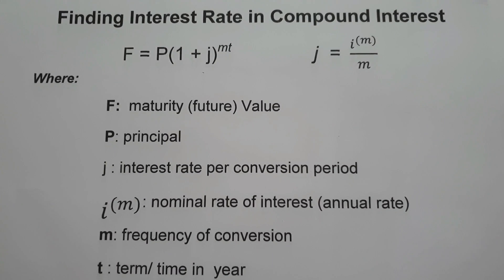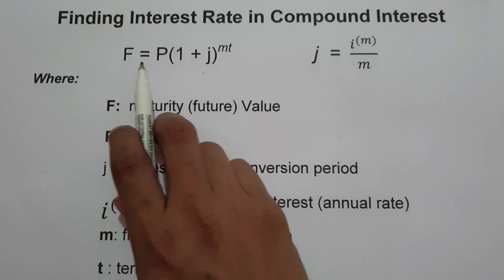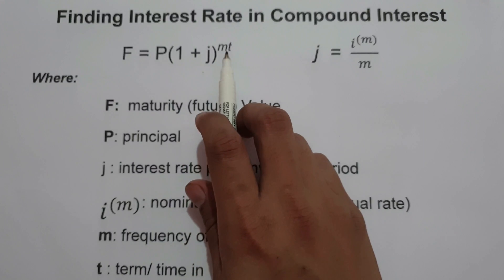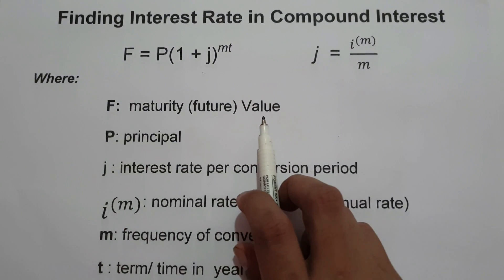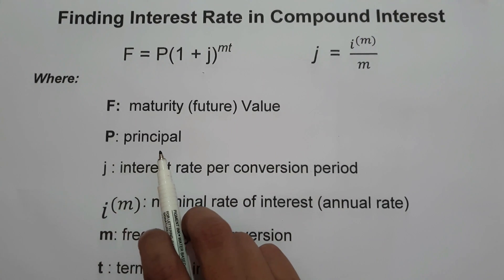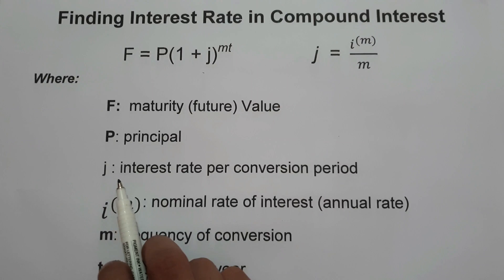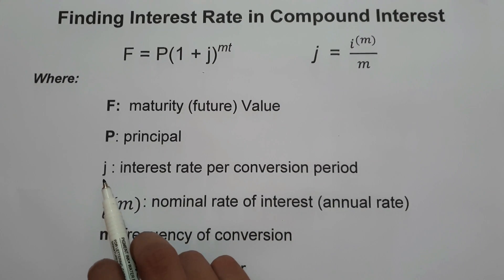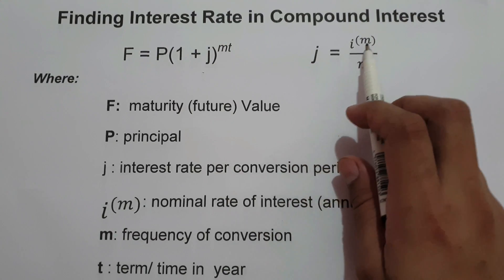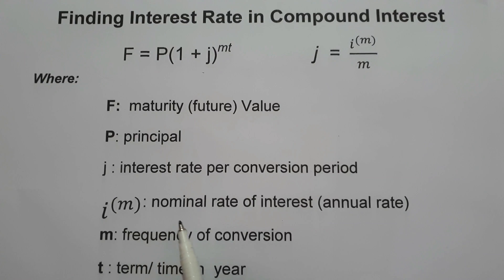For today's video, we are going to talk about how to find the interest rate in compound interest. We are going to use the formula F equals P times the quantity of 1 plus J raised to M times T, where F is the future value or maturity value, P is the principal or present value, J is the interest rate per conversion period — found using J equals I^M over M — where I^M is the nominal rate, M is the frequency of conversion, and T is the term or time in years.